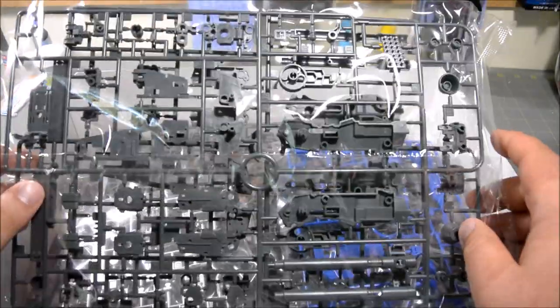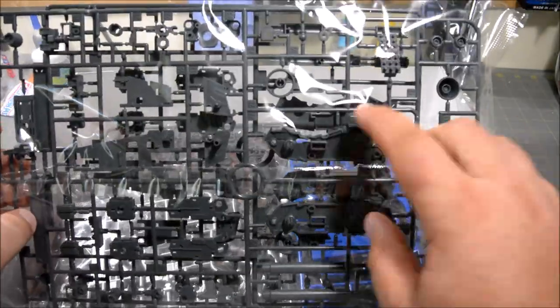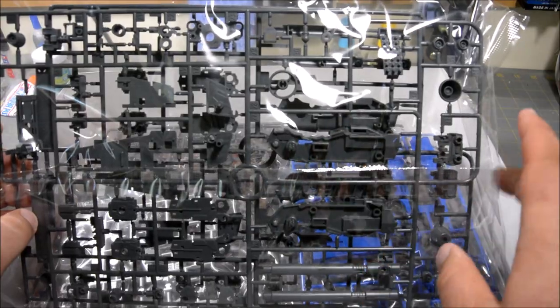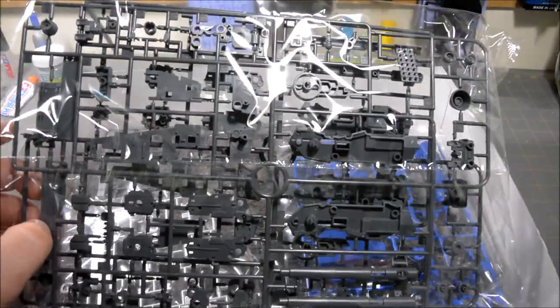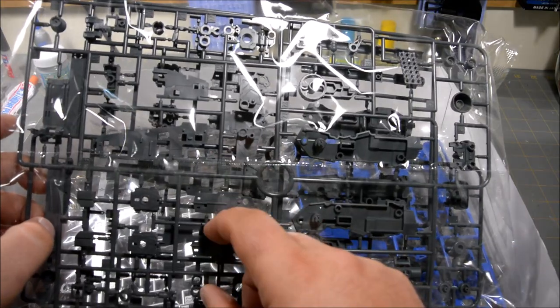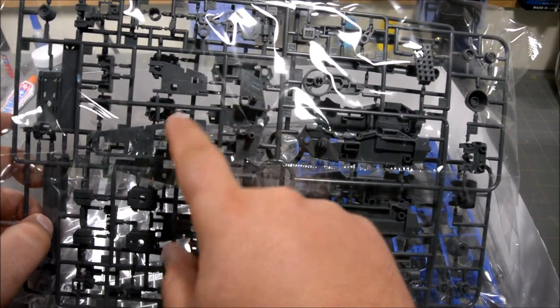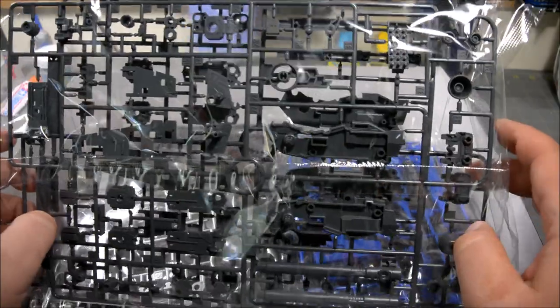All right, inner frame bits. I've got some big chunks of plastic here for the backpack. One thing I thought was really interesting is that the wings on the forearms actually have a bit of inner frame to them, so that's kind of cool.